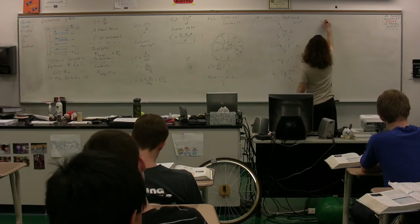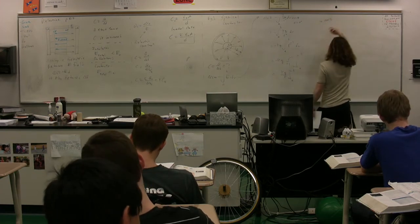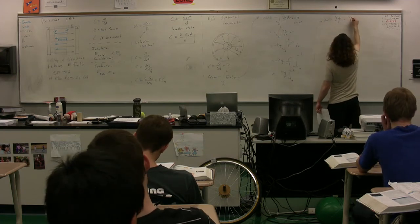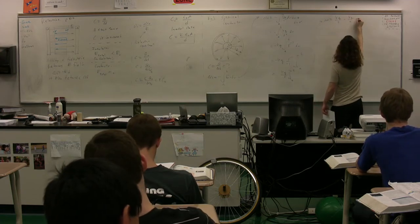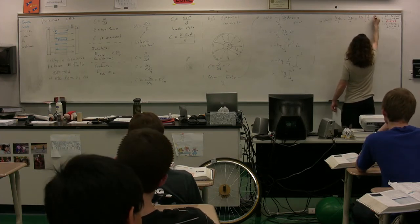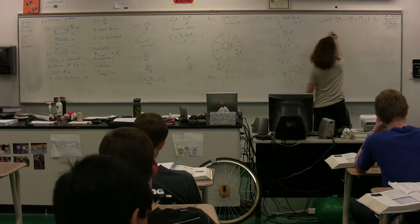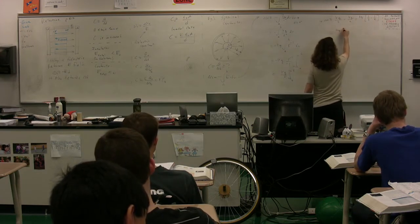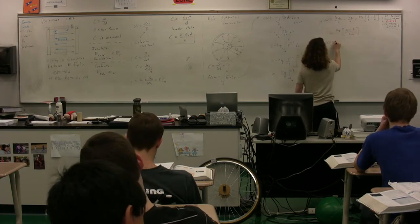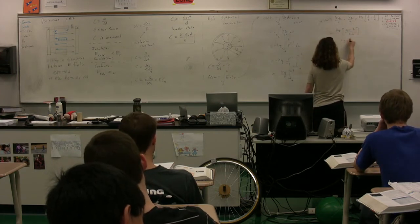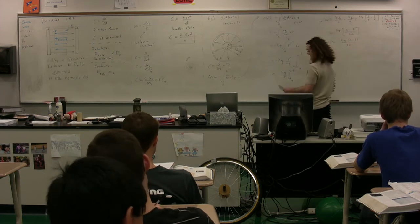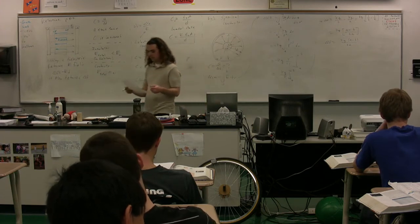We have the electric potential difference equals kq over b minus kq over a. Let's work with just this, kq, one over b minus one over a, to make it easier to work with. To get a common denominator, we have a minus b on the top divided by ba on the bottom. So, the electric potential difference equals k times q times the quantity a minus b, all of that divided by ba. That is our electric potential difference.